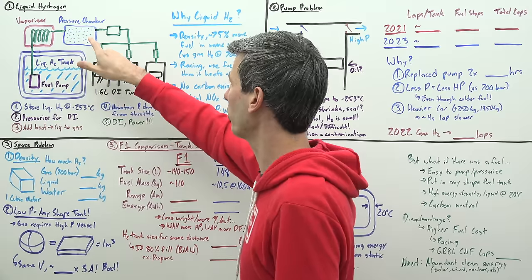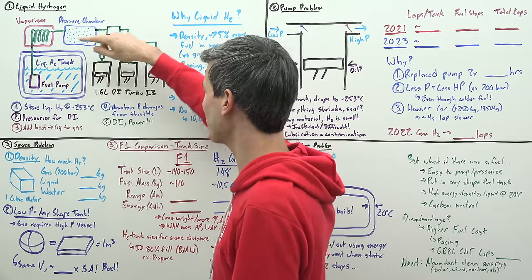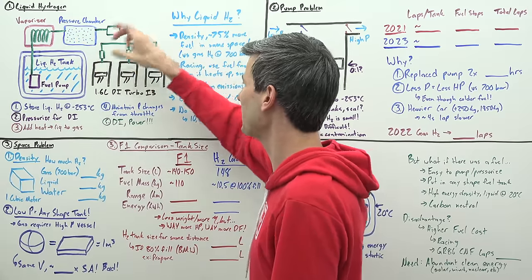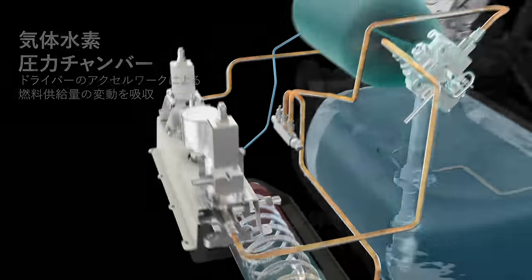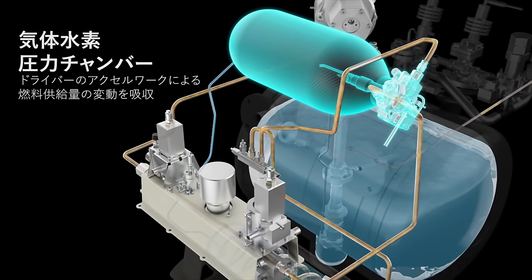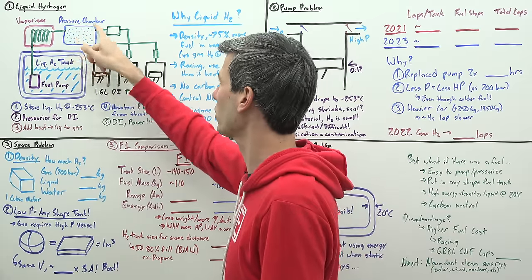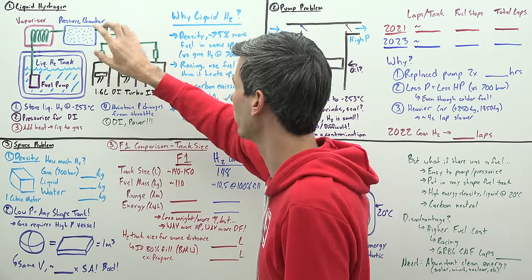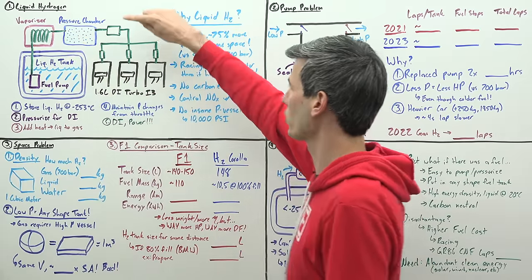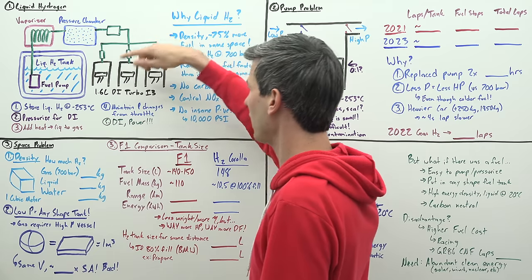That passes through a pressure chamber, which is simply a vessel for maintaining any pressure changes that your engine experiences because the throttle controls how much fuel is going into the engine. You're going to have varying pressure occur and that pressure chamber takes care of that. Then you directly inject that hydrogen into your engine.